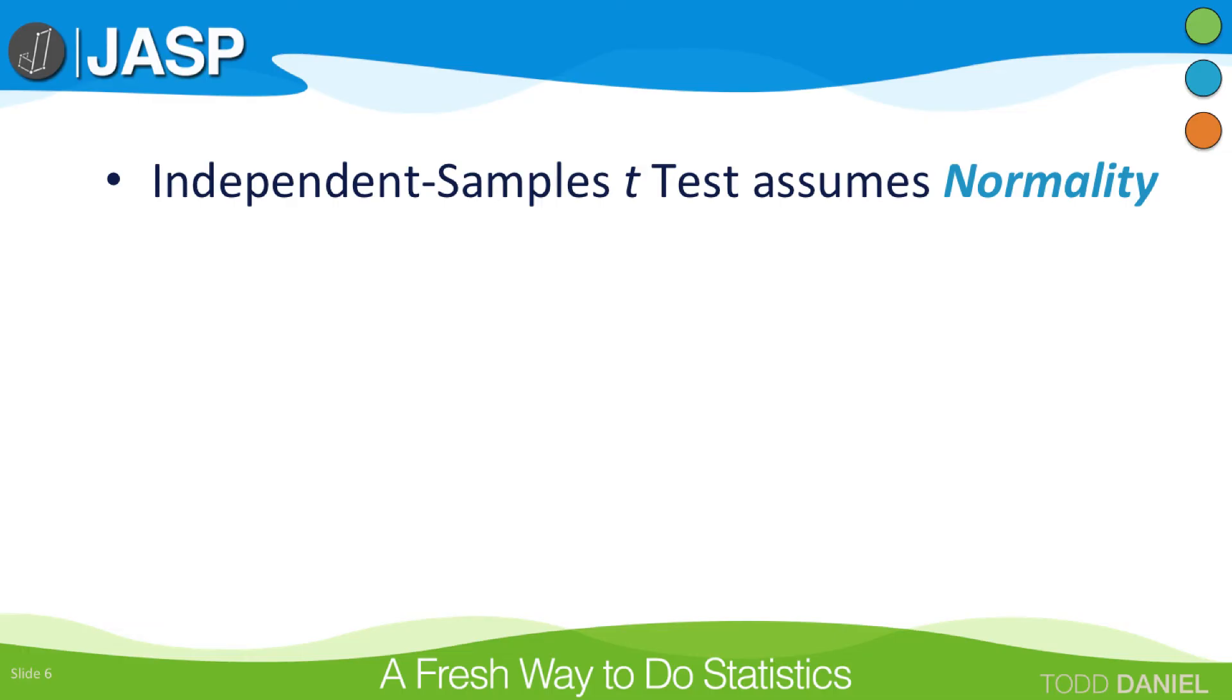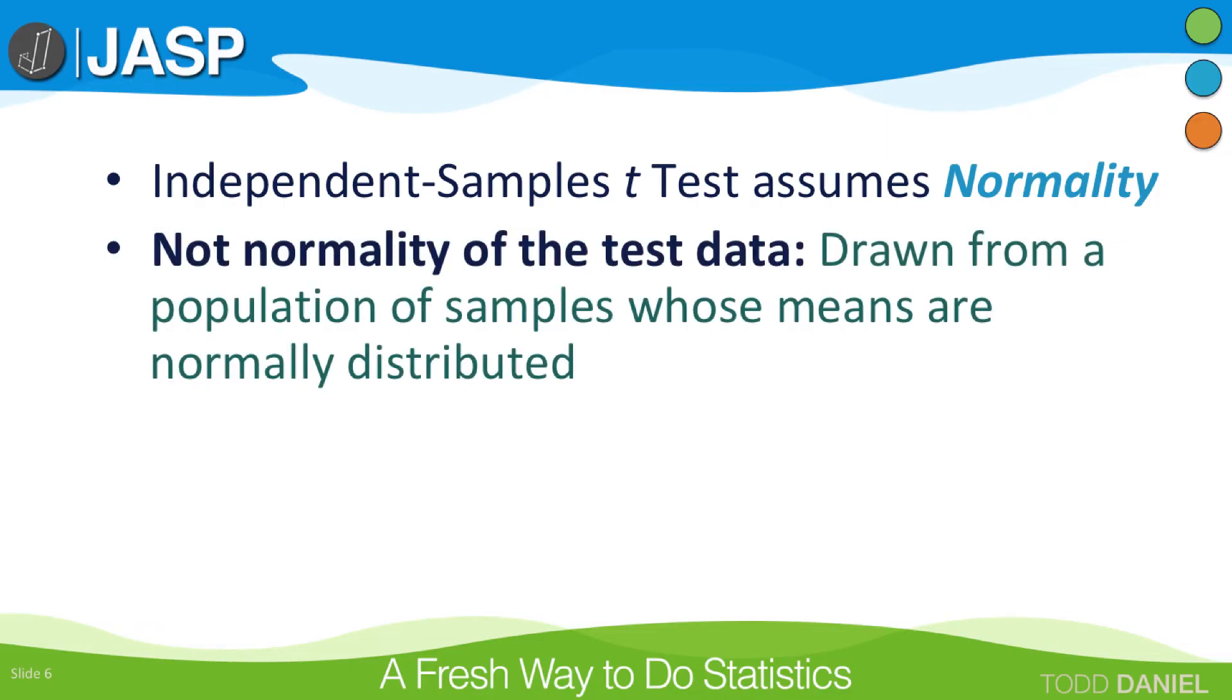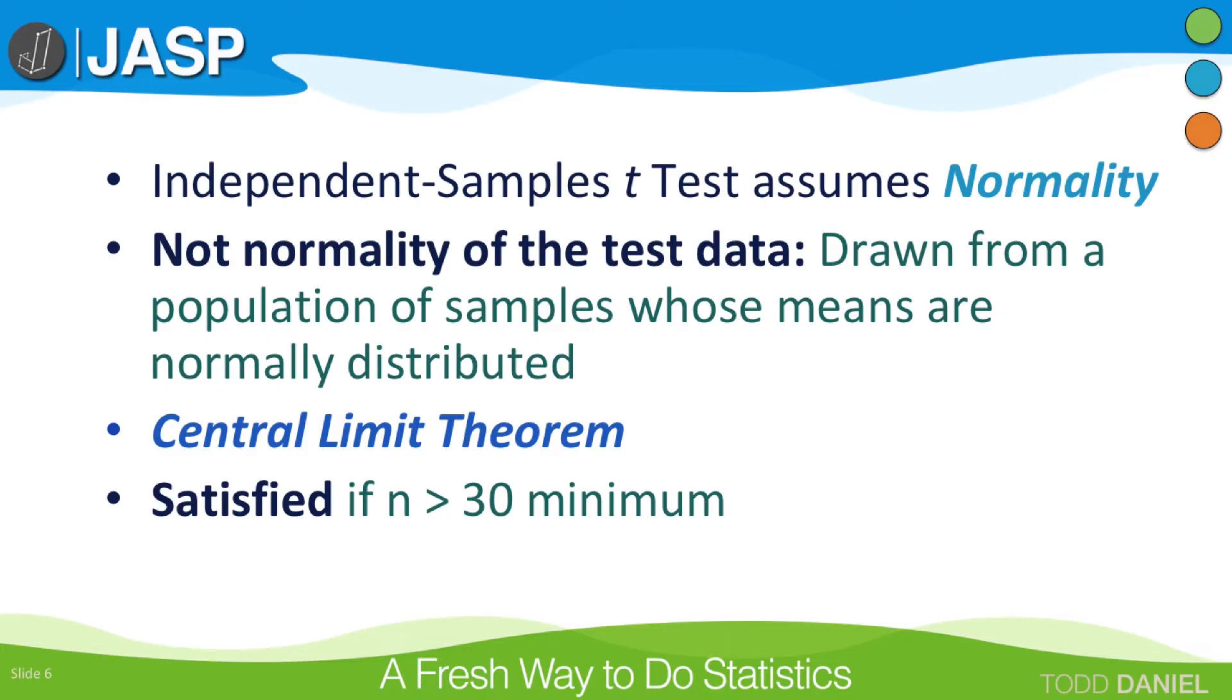There is also a second assumption for independent samples t-tests, normality. This is often understood to mean that your dependent variable must be normally distributed. In fact, the actual assumption is that your sample is drawn from a population of samples in which the distribution of sample means is normally distributed. Now I'm going to explain this more fully in a lecture on the central limit theorem, but for now, a safe bet is that when you have more than 30 participants in each group, you have likely satisfied the assumption of normality. What we need to know is that we will test this assumption using a Shapiro-Wilk test, which, like the Levene's test, we would prefer to be non-significant, that our sample does not differ from normality.